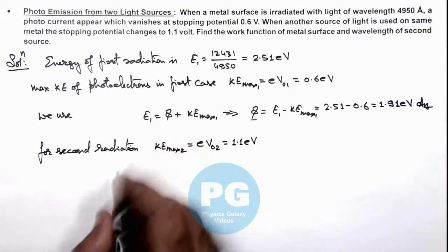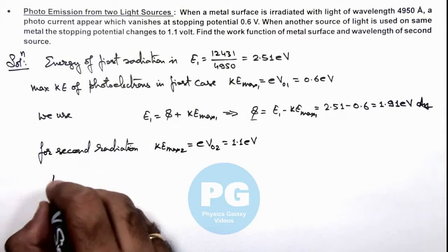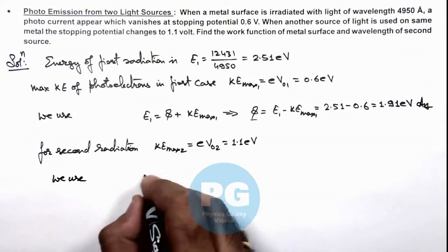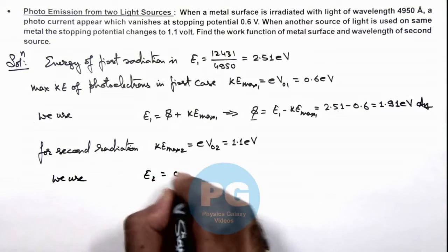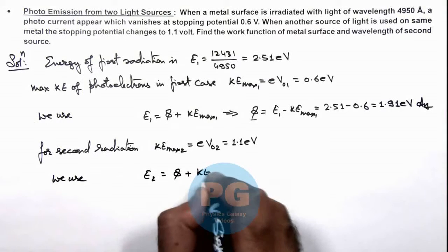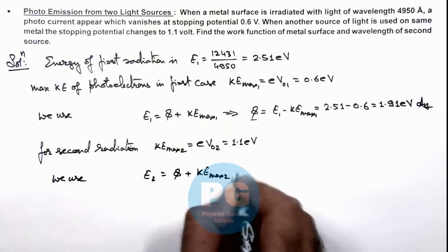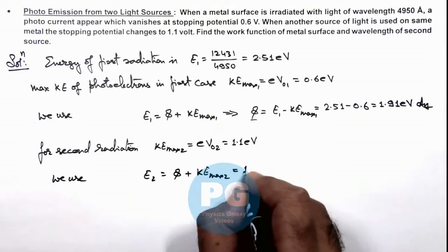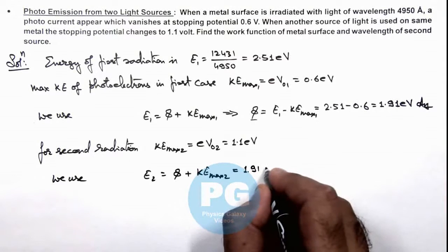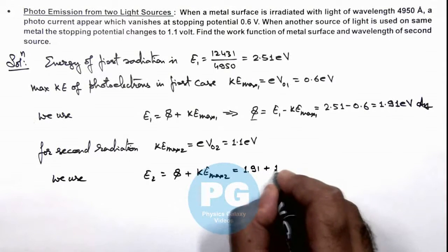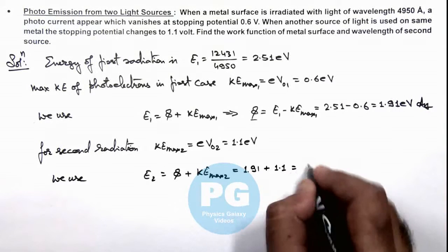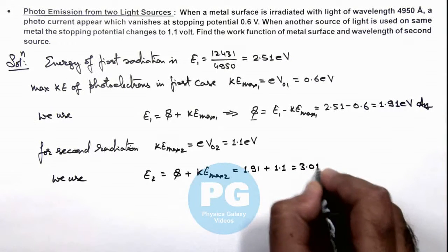In this case, if we again write the equation of photoelectric effect, we use E₂ equals work function plus KE_max₂. The work function remains the same at 1.91 electron volts plus the maximum kinetic energy of 1.1, which equals 3.01 electron volts.